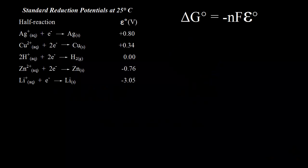When working with standard reduction potentials, it's important to realize that voltage is an intensive property. We're going to use this first half reaction as an example — the reduction of silver ion to silver metal: Ag+ plus an electron gives us solid silver. The standard reduction potential is positive 0.80 volts for this half reaction, and we're going to start by calculating the standard change in free energy.